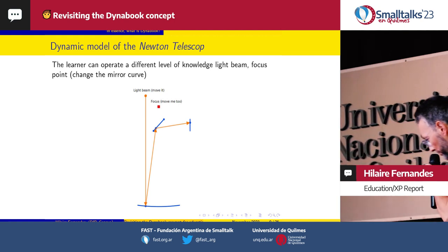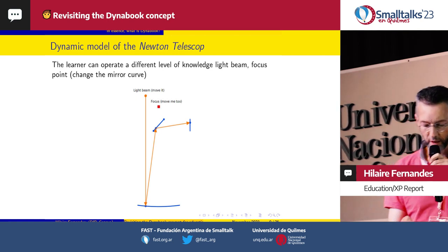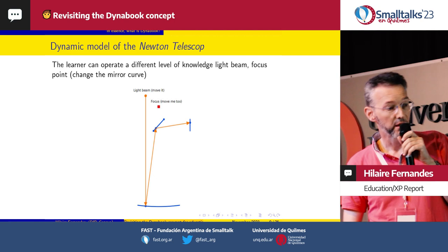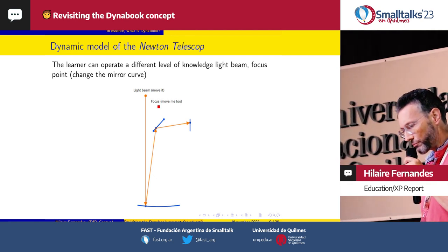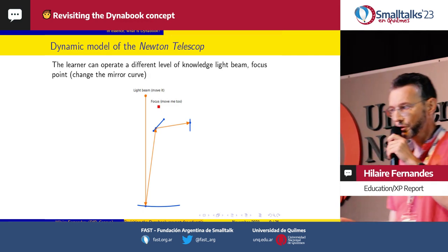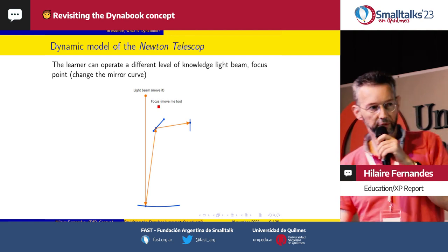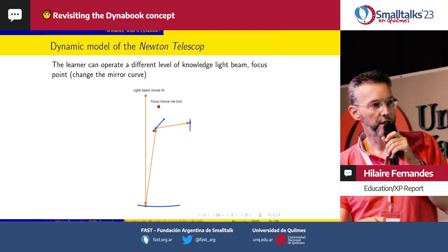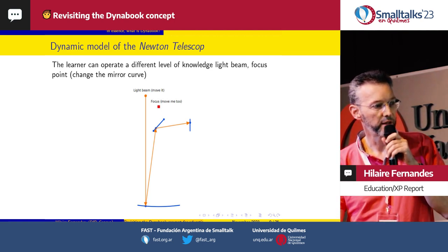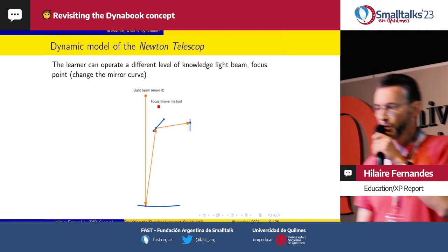If you take this example, this is the simulation of a Newton telescope. This picture is static. Let me first explain what it is. The Newton telescope — you can imagine the telescope like that. On the back, you have a parabolic mirror. You have a secondary mirror. Then you have here the eyepiece, and another lens. The light beams go there, then they are concentrated on the secondary mirror, and they go there. This is the principle of the Newton telescope.